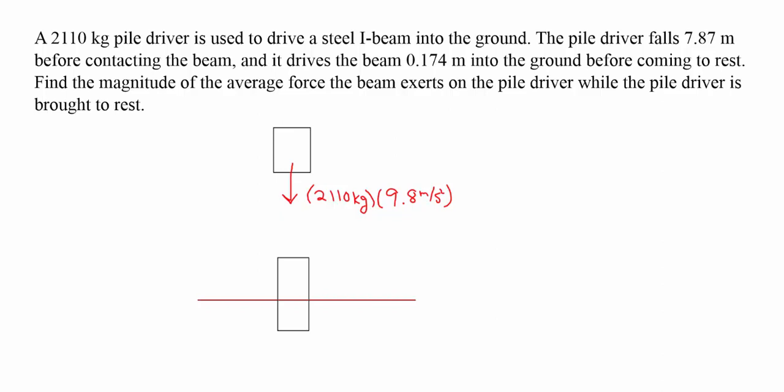This problem shows a pile driver that's being dropped on an I-beam to drive it into the ground. The pile driver, which has a mass of 2,110 kilograms, is falling a distance of 7.87 meters, contacting the beam, and then driving the beam an additional 0.174 meters into the ground before it comes to rest.